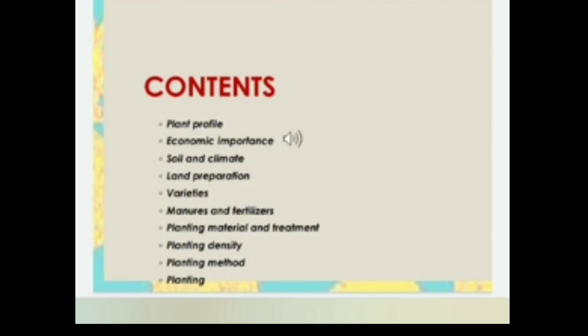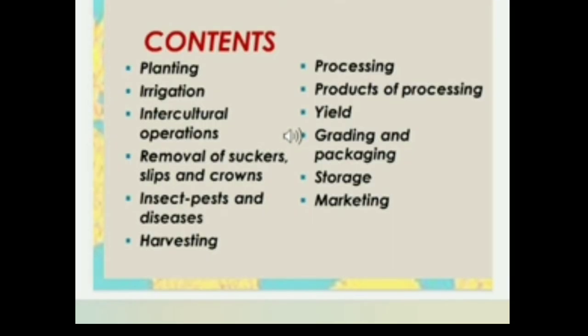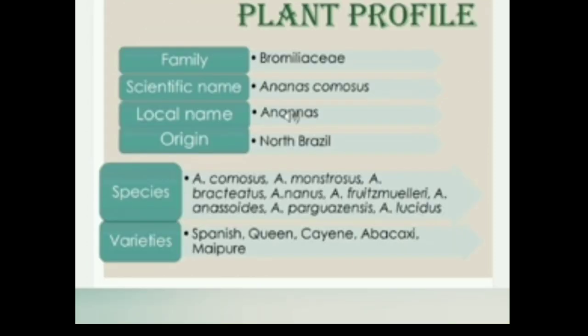Here are the contents: Plant Profile, Economic Importance, Soil and Climate, Land Preparation, Varieties, Manures and Fertilizers, Planting Material and Treatment, Planting Density, Planting Method, Planting, Irrigation, Interculture Operations, Removal of Suckers, Slips and Crowns, Insect Pests and Diseases, Harvesting, Processing, Products of Processing, Yield, Grading and Packaging, Storage and Marketing.